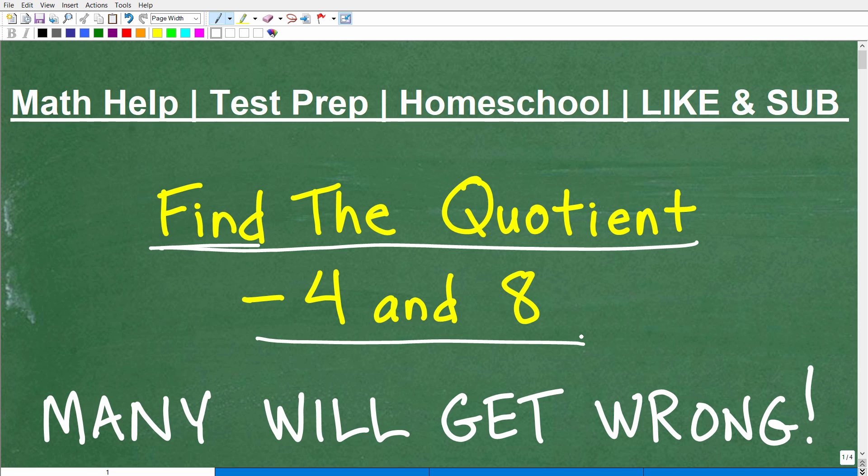Of course, I'm going to answer it, but I'm going to give you an opportunity to give me your answer. Put into the comment section the quotient of negative 4 and 8 is equal to what? Well, it seems pretty simple, and there's only a couple different ways we can manipulate this problem. But here's the deal.